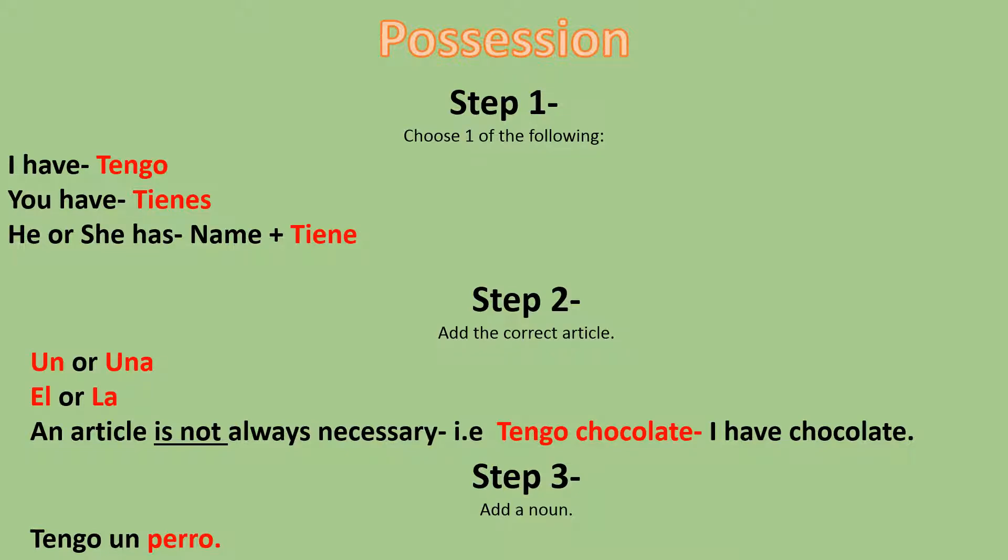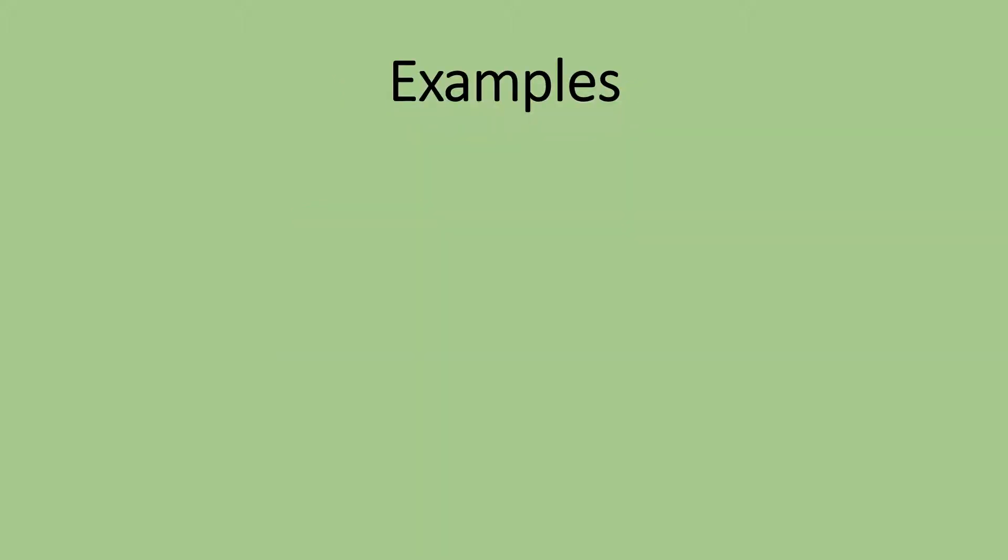Let's review these words: tengo, tienes, tiene. Here are some examples. Tengo una casa, which means I have a house. Tienes un perro, which means you have a dog. Juan tiene una vaca, which means Juan has a cow.